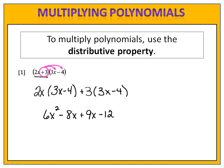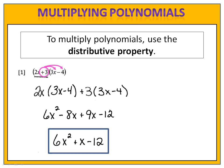When we do that, we end up with 6x squared plus x minus 12. That's the product of 2x plus 3 and 3x minus 4. Remember, the product is the result that you get from multiplication.